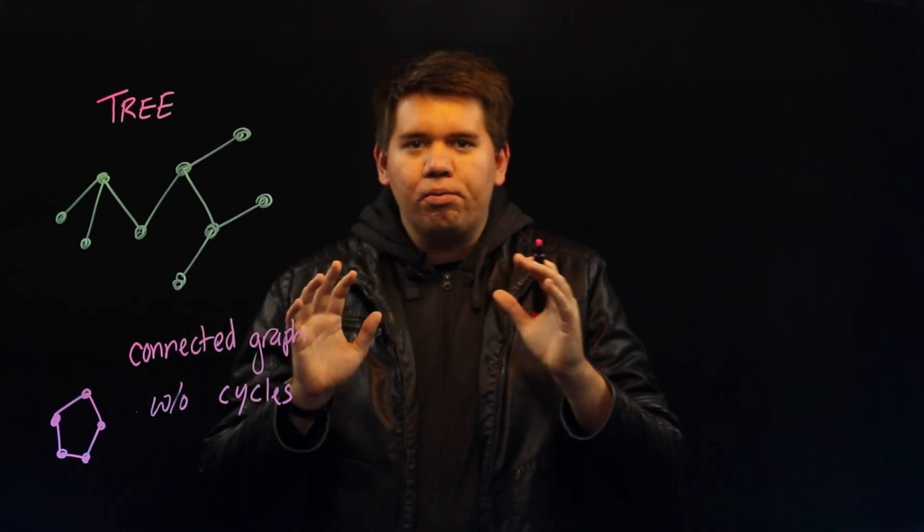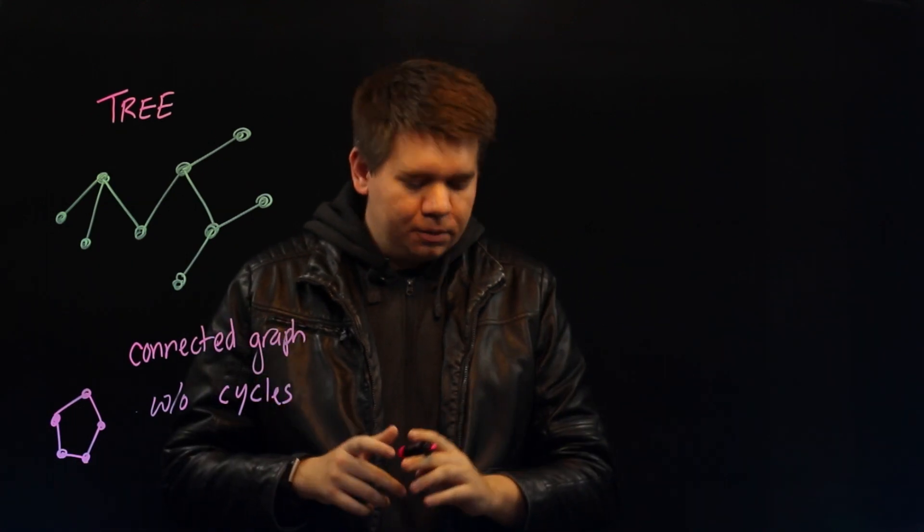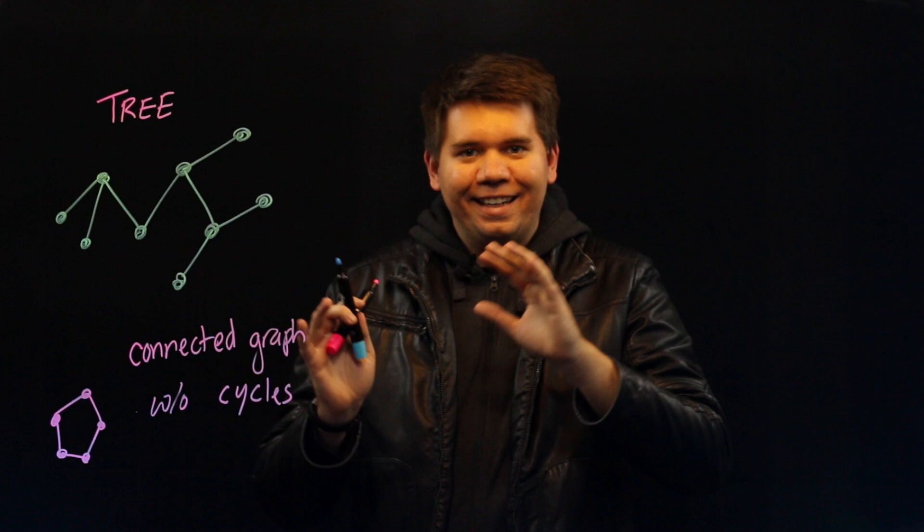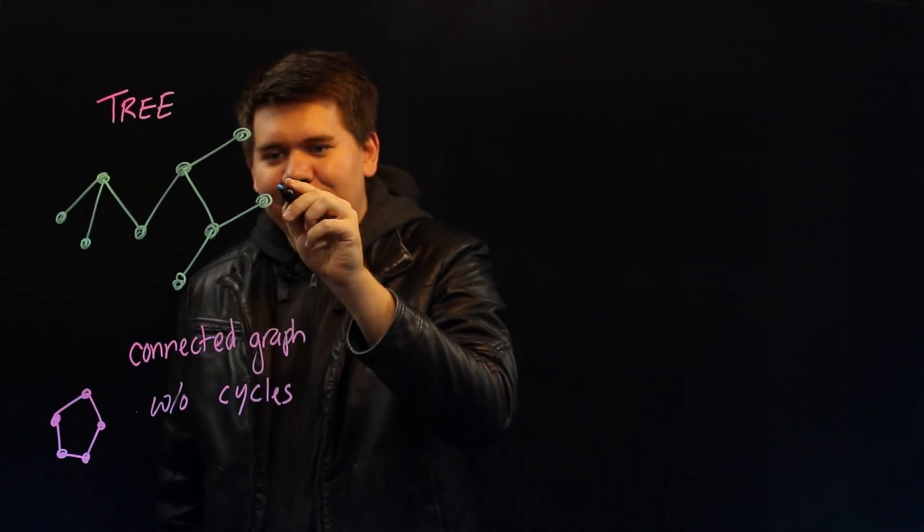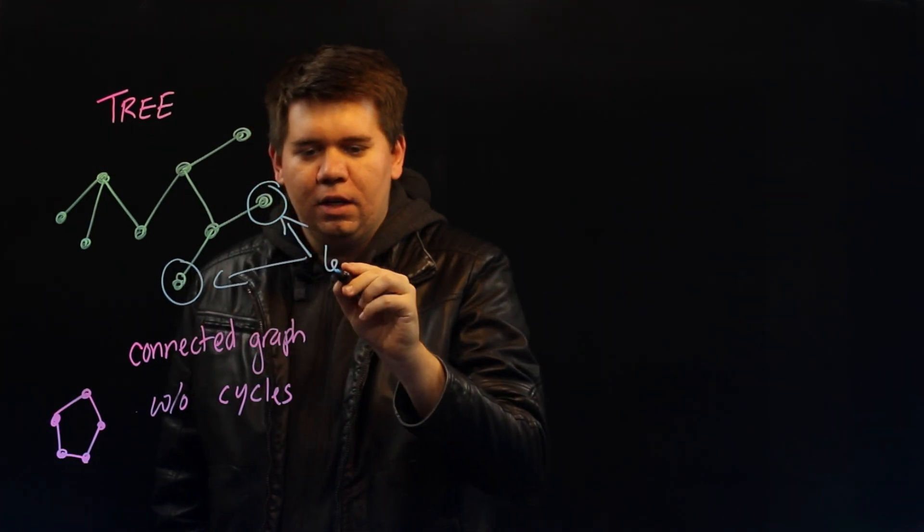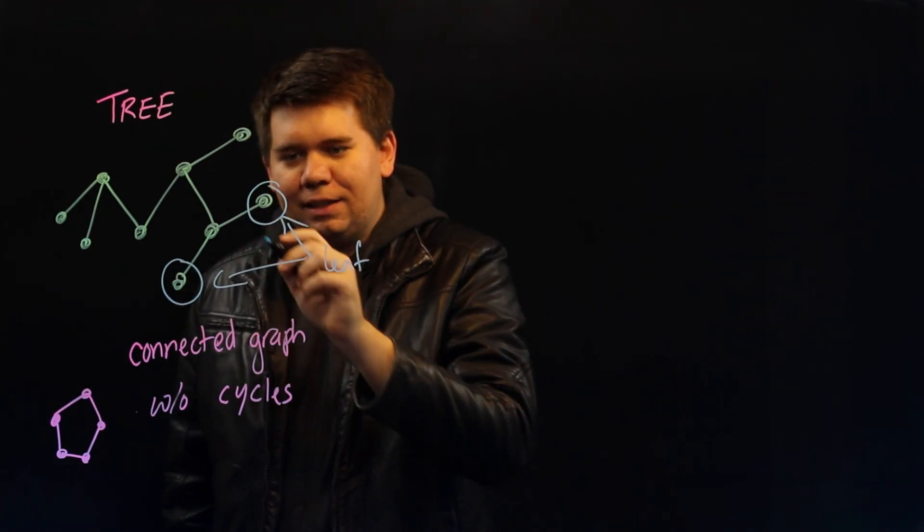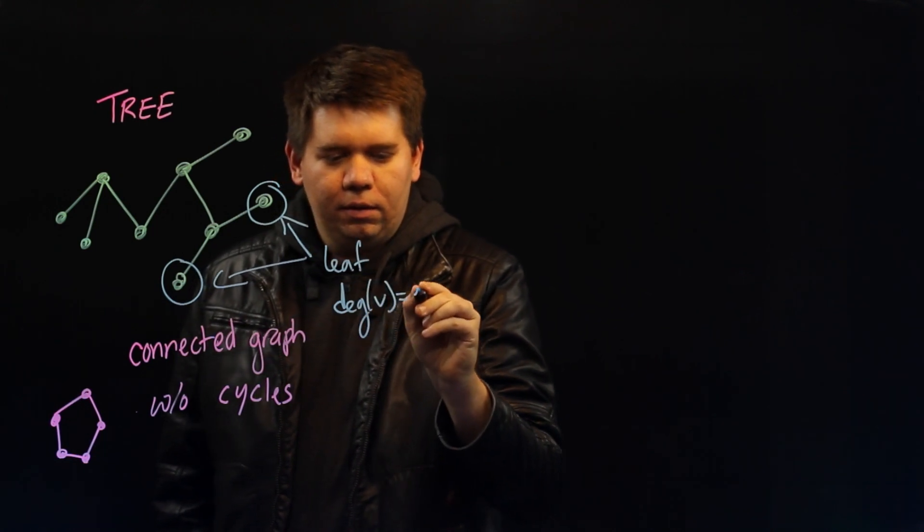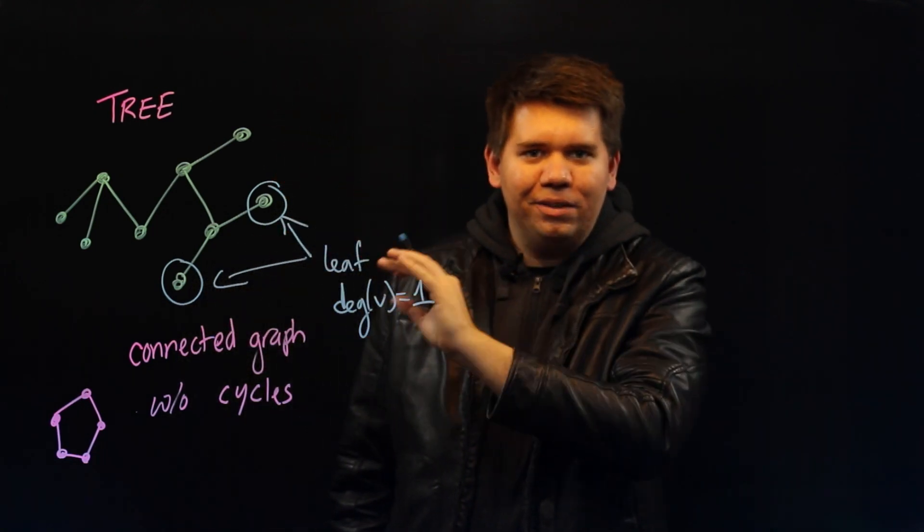What are some of the properties of trees? You might notice that on a tree, there are many leaves. That is, on a tree, you will have vertices that have degree exactly one. We call these the leaves of the tree.